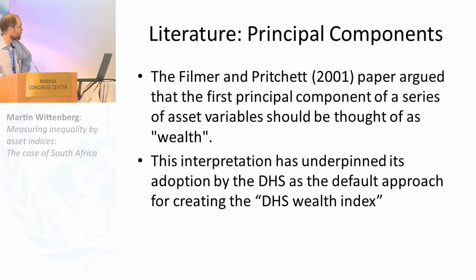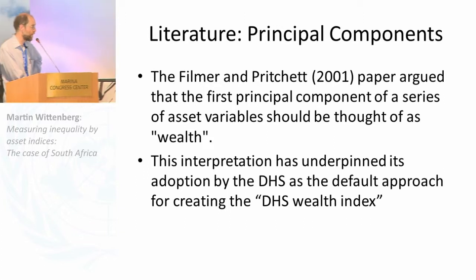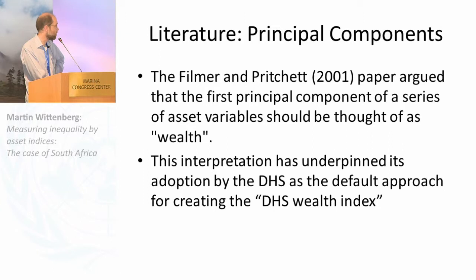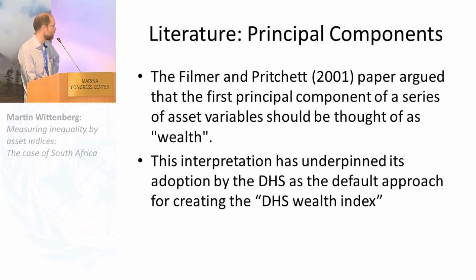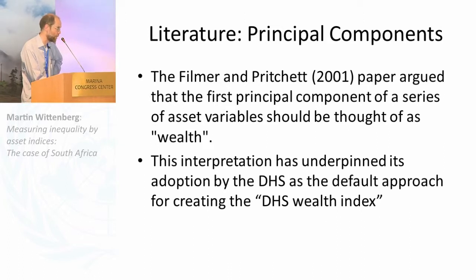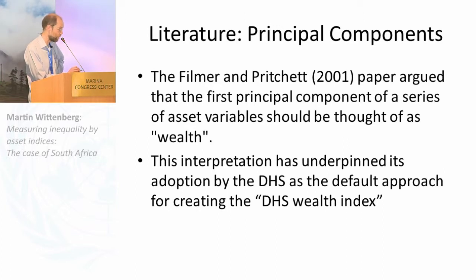The literature really goes back to the Filmer-Pritchett paper of 2001, which argued that if you only had asset schedules, by simply running a principal component over the schedule you could extract the first component — and whatever is common to these assets should be thought of as wealth. That intuitive justification was seized on by the people who ran the demographic and health surveys, who then put it in as a default approach for creating a wealth index, released with every DHS — which is why these indices are used so commonly.